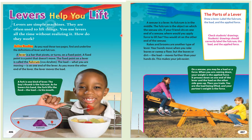A seesaw is a lever. Its fulcrum is in the middle. The fulcrum is the object on which the seesaw sits. If your friend sits on one end of a seesaw, where would you apply force to lift her? You would sit on the other end of the seesaw. Rakes and brooms are another type of lever. Your hands move when you rake leaves or sweep a floor, but the leaves, or dirt, the load, moves farther than your hands do. This makes your job easier.